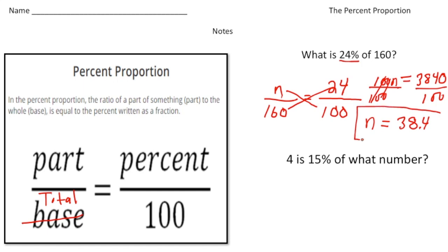So as long as you put the right pieces into the proportion, you can solve it every single time the same way by cross multiplying and then solving the equation. Now this one's a little bit different. This one is saying 4 is 15% of what number? So what they're saying is 4 is 15% of another number that's bigger.